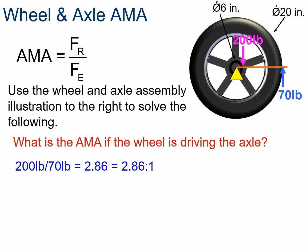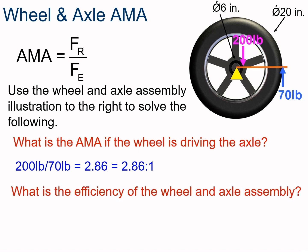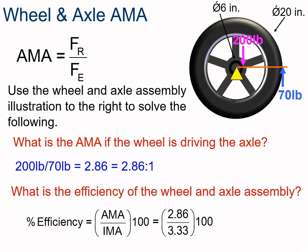Of course, that means we're more than doubling the distance we're going to travel. So what's the efficiency of this wheel based on the IMA we solved for earlier? Pause the video and calculate. Efficiency is the AMA divided by the IMA times 100. That's 2.86 divided by 3.33 times 100, and you should have got 85.9% — pretty good.